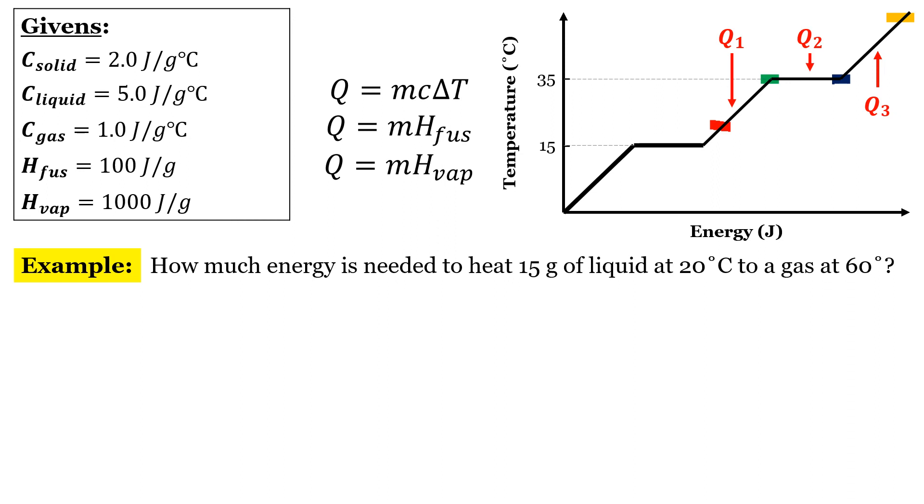So for the first part, since we're just raising the temperature, we're going to use the q equals mc delta t equation. So let's plug everything in. 15 grams. Since we're a liquid, we'll use the c liquid, which is 5.0 joules over grams degrees Celsius times the change in temperature. Now, take a look at what's going on. We are transitioning from 20 degrees to 60 degrees, but we're only going up to 35 degrees for that first point. So 35 minus 20 is only a difference of 15 degrees Celsius. So when we multiply those three numbers out, we get 1,125 joules.